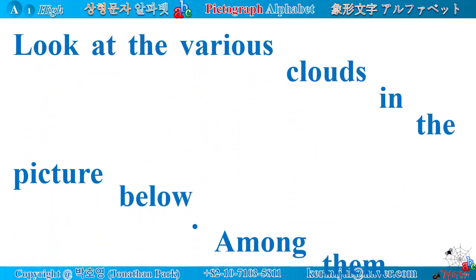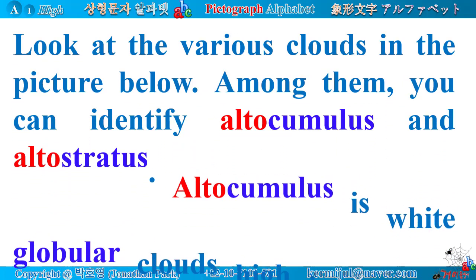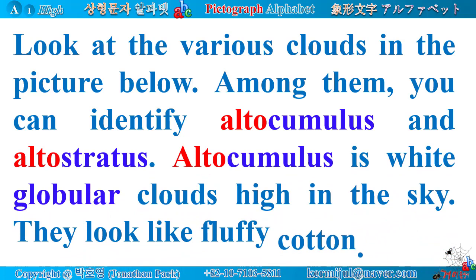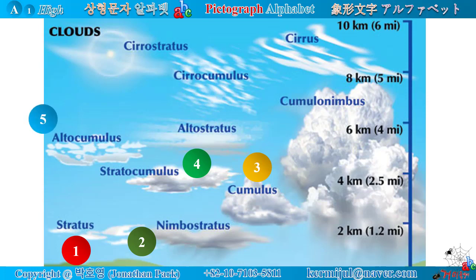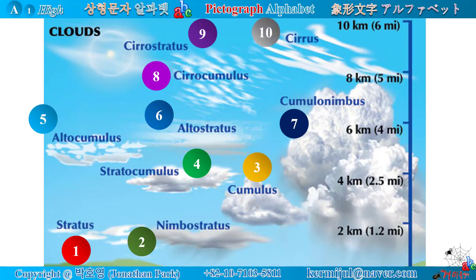Look at the various clouds in the picture. Among them you can identify altocumulus and altostratus. Altocumulus are white globular clouds high in the sky — they look like fluffy cotton. Clouds chart: (1) stratus, (2) nimbostratus, (3) cumulus, (4) stratocumulus, (5) altocumulus, (6) altostratus, (7) cumulonimbus, (8) cirrocumulus, (9) cirrostratus, (10) cirrus.